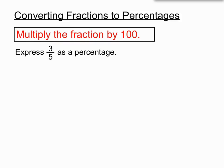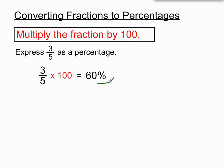So to express 3 fifths as a percent, we will do what the rule says and multiply 3 fifths by 100. We usually have our calculator to do this, so we'll just run it through here. 3 fifths times 100 on the calculator will give us 60. We will add our own percent sign at the end of it. Don't go messing with the percent sign on your calculator — it can get you into a bit of a mess.